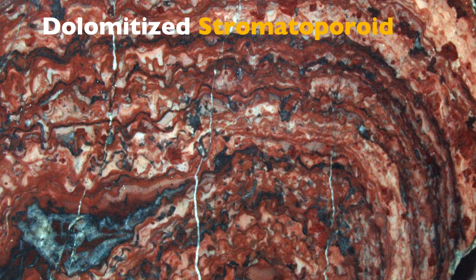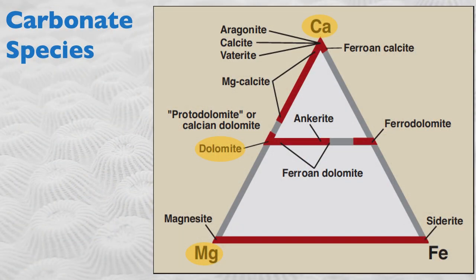Be aware, though, that dolomites are not always red. One thing that can happen is you can substitute some of the magnesium of the dolomite with iron. That gives you a family of iron-rich dolomite known as ankerite. Ankerite is again pretty common as a diagenetic mineral, but not really common as a precipitate in the ocean.